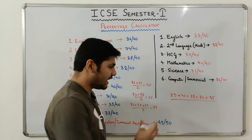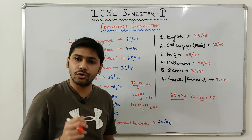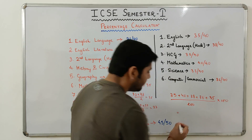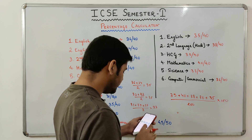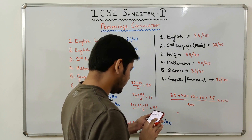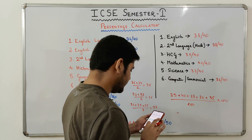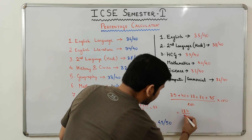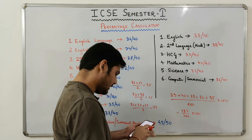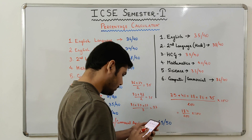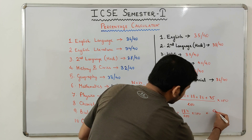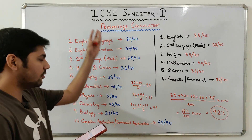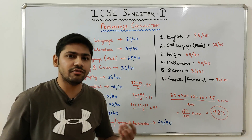This total is divided by the total possible marks: 5 subjects multiplied by 40 equals 200, then multiplied by 100 to get the percentage. So: 35 plus 40 plus 38 plus 36 plus 35 equals 184. Therefore 184 divided by 200 multiplied by 100 equals 92 percent. So for these marks, the final percentage using the Best of 5 method comes out to 92%.